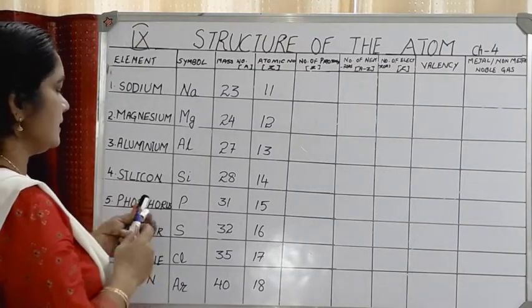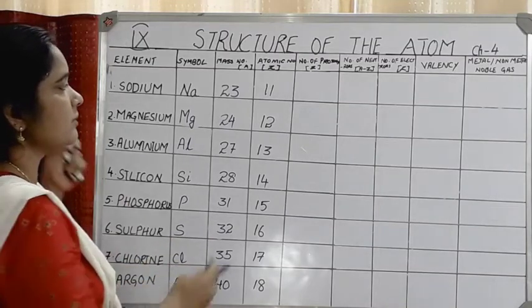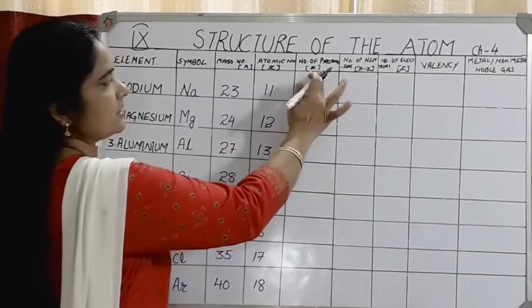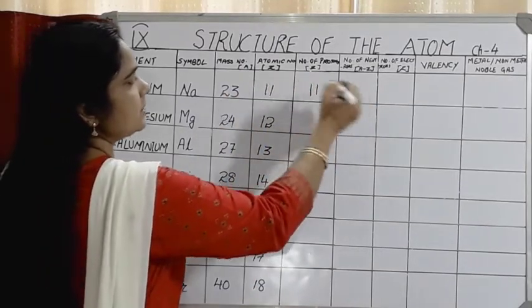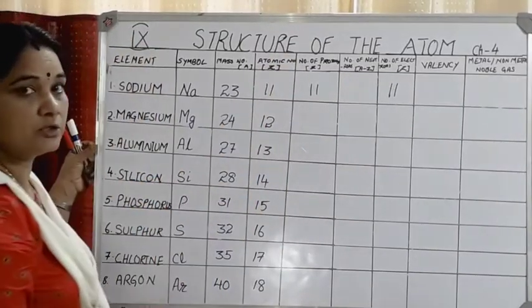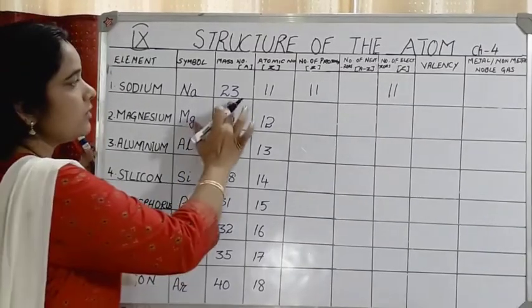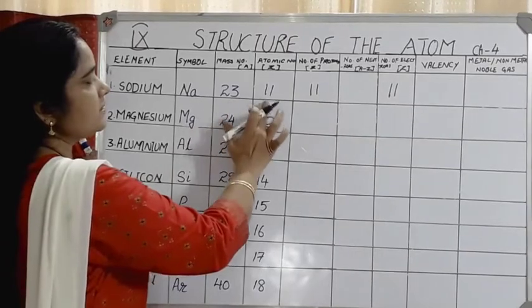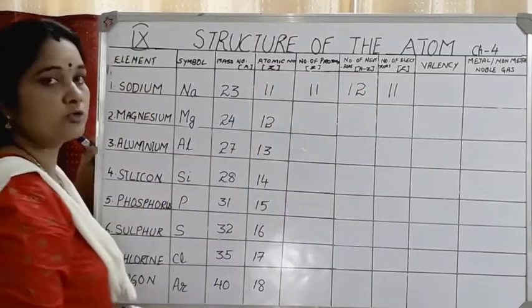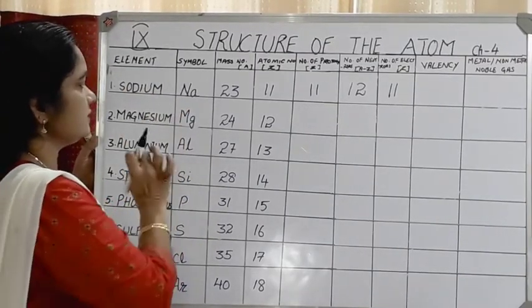Let's start with sodium. Sodium has atomic number 11, so the number of protons is 11. Since number of protons equals number of electrons, electrons = 11. The mass number of sodium is 23, so the number of neutrons = 23 minus 11 = 12. That is the number of neutrons present in the nucleus of sodium.